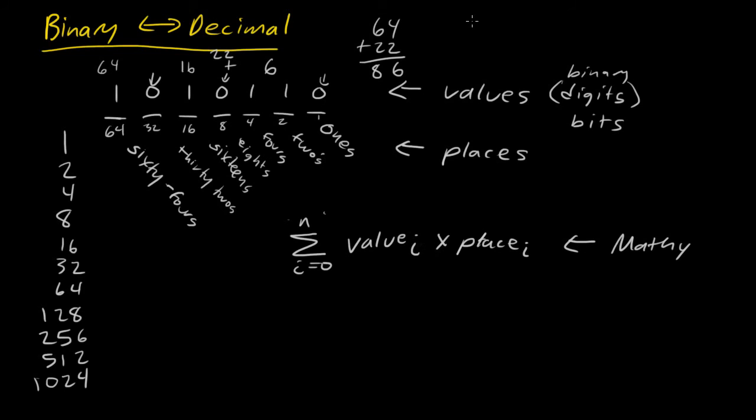That, by the way, was the binary to decimal conversion. All we did was just reach place value. We multiplied it by the corresponding value. That's what we did.